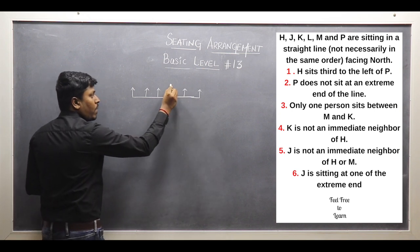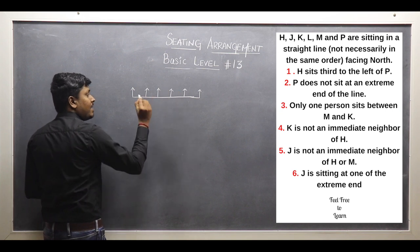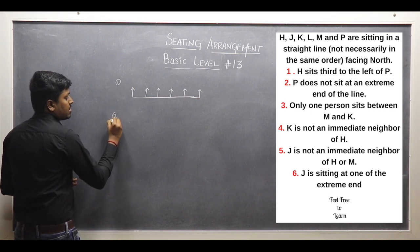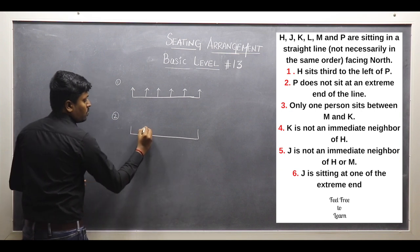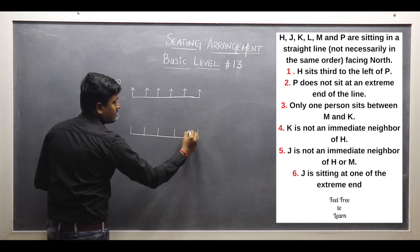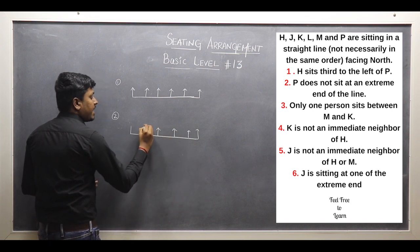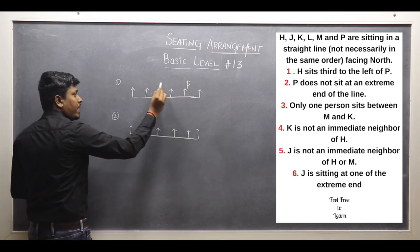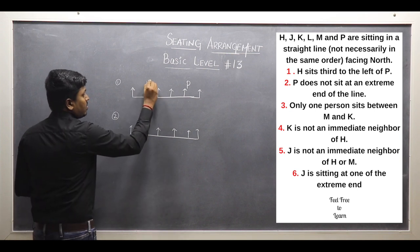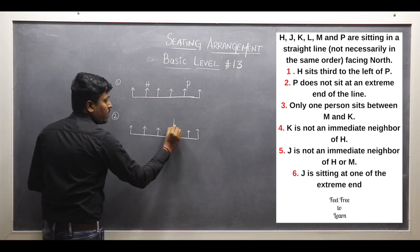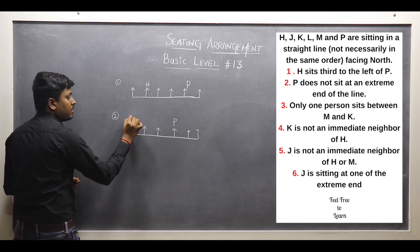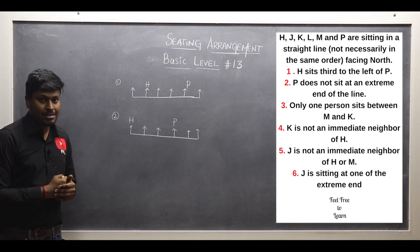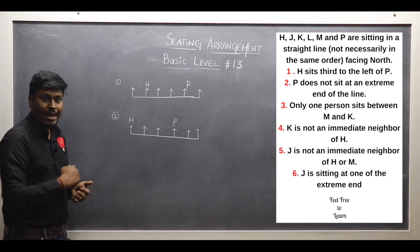If I fix P at position 4, then 1, 2, 3 — this can be H. Or if I fix P at position 5, then 1, 2, 3 — this can be H. So I am going to draw two possible diagrams. In possible diagram 1, I fix P here; P's left-hand side at the third place is H. In possible diagram 2, I fix P one position over; left-hand side 1, 2, 3 — this will be H. In both diagrams, P's left-hand side third place is H, and P is not at any extreme end.